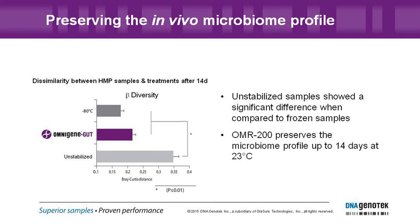When we look at the same data represented with Bray-Curtis distances, we show that the OmniGene Gut samples after 14 days show no significant difference in beta diversity profile compared to a frozen sample. Whereas the unstabilized sample is completely different — it's completely shifted from the other two gold standards.